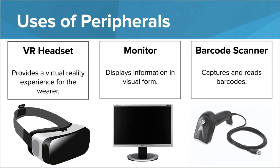Here we have a virtual reality headset, a monitor, and a barcode scanner. This VR headset wouldn't be the one that you place your phone inside, but rather would connect to a device such as a computer. Even if it connects through Bluetooth, which is wireless, it's still considered a peripheral. A monitor is included in most computer setups, and the barcode scanner would most likely be used in a grocery store or a small business setup.